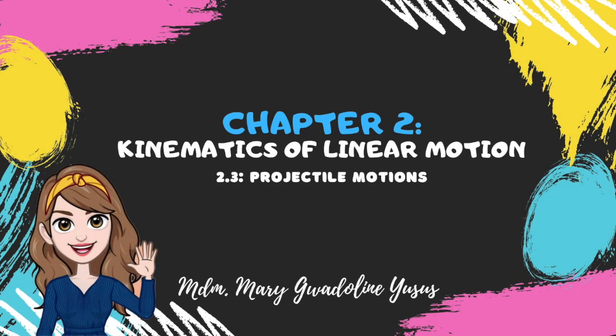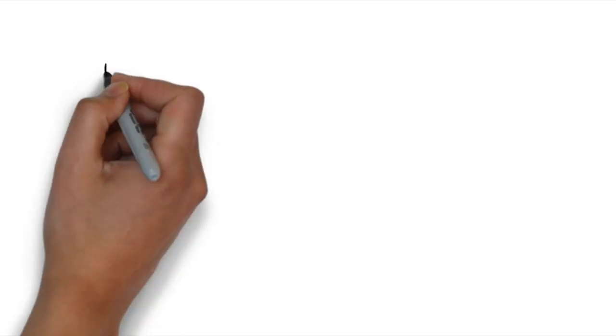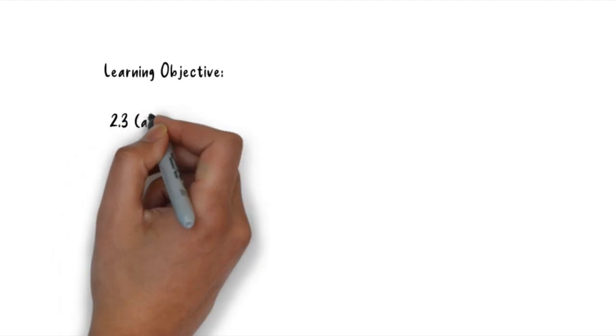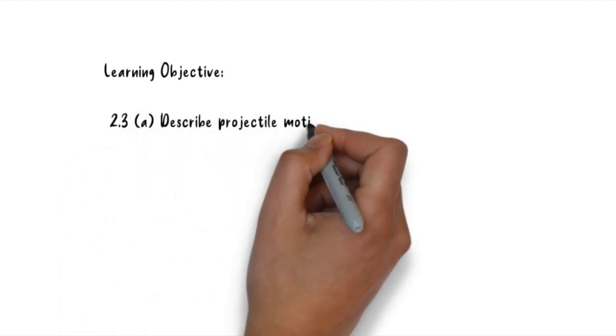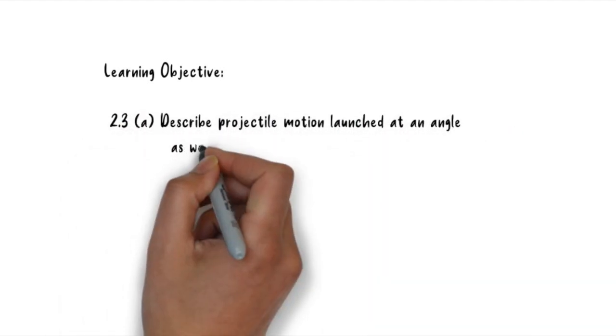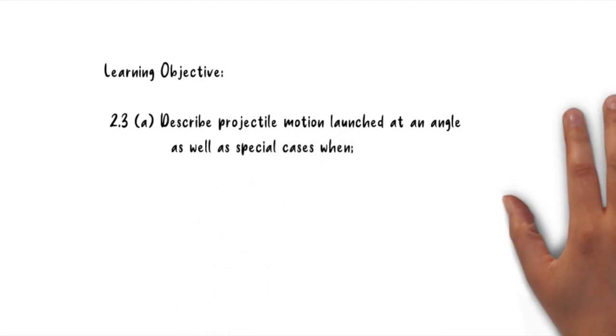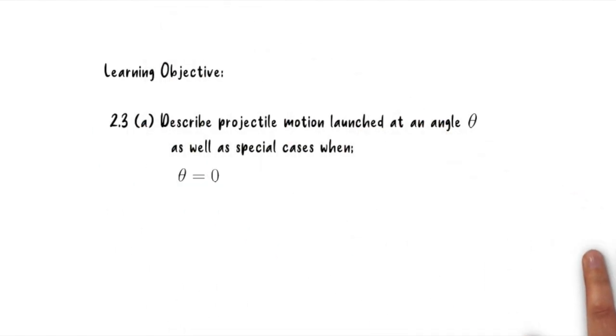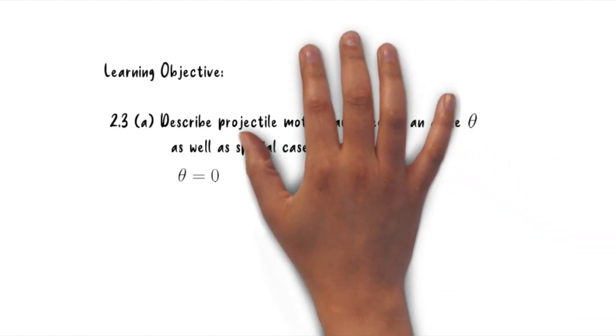Hello everyone, welcome back. In this video I'm going to talk about projectile motion. The learning objective we need to achieve is to describe projectile motion launched at an angle theta, as well as special cases when theta equals zero and theta equals 90 degrees, which is free fall motion.